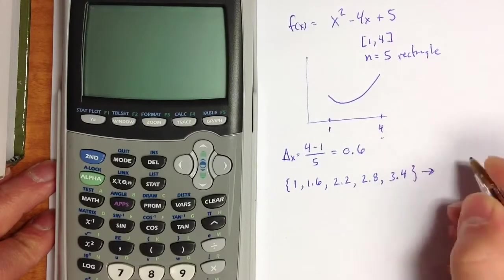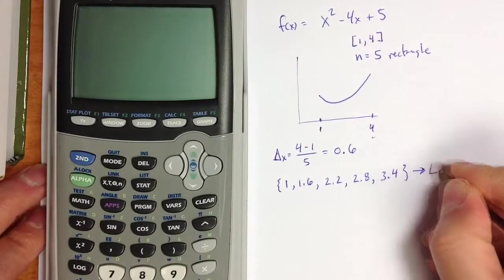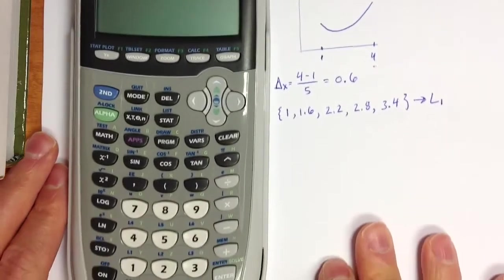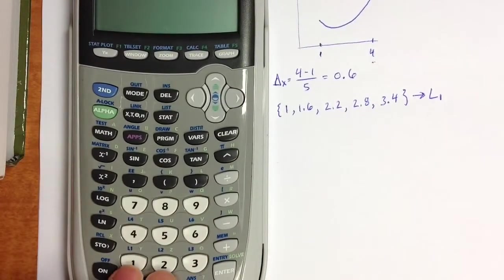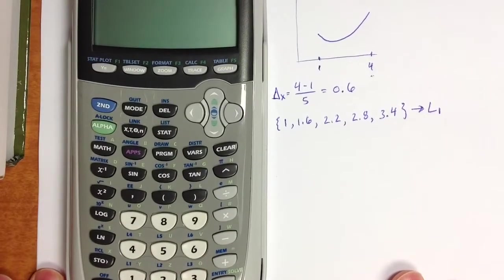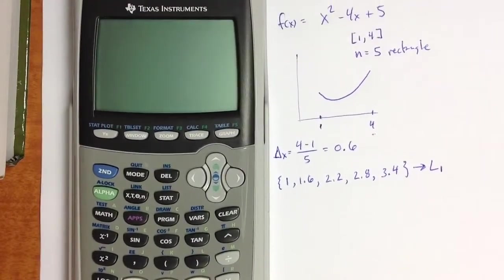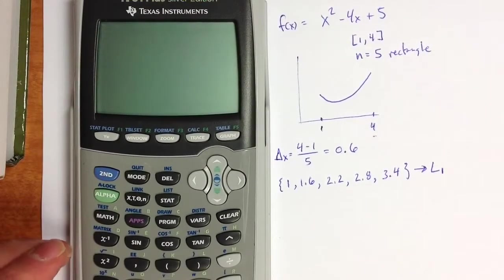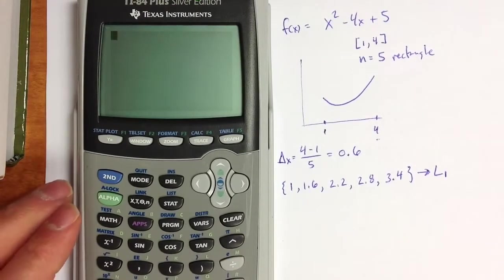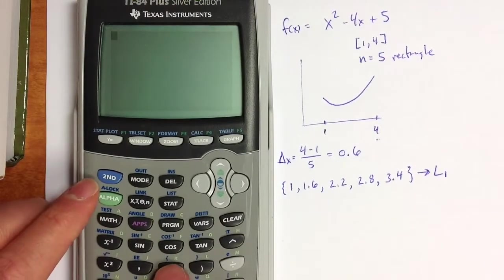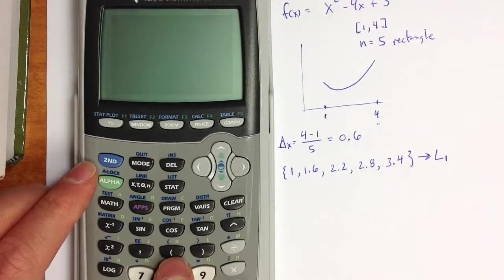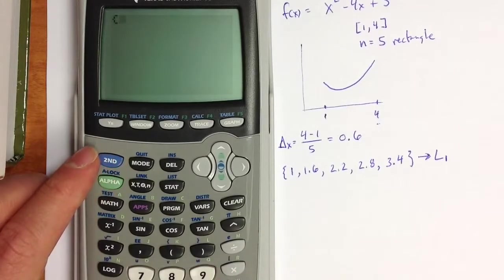I'm going to store those left endpoints in the list L1. In the calculator, we have 6 lists available: L1, L2, L3, L4, L5, and L6. There are a few different ways to enter values into the list. What I find most convenient is to use the curly braces above the parenthesis key to open the list.